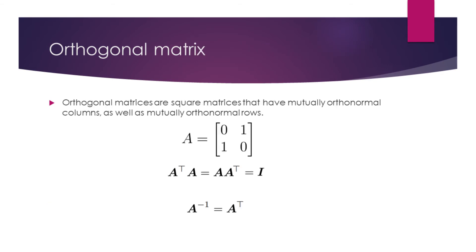Orthogonal matrices are square matrices that have mutually orthonormal columns as well as mutually orthonormal rows. Matrix A is an orthogonal matrix. What's special about orthogonal matrices are their properties. The matrix product with its transpose results in an identity matrix. This happens because the transpose and inverse of the orthogonal matrices are equal.